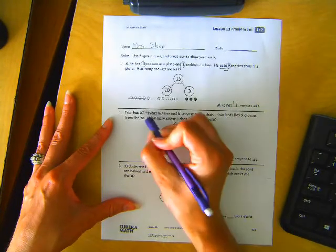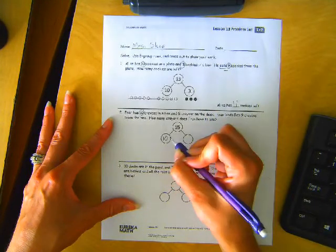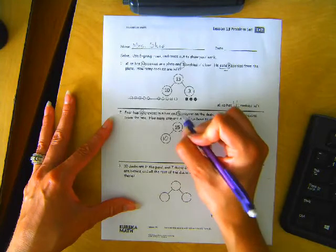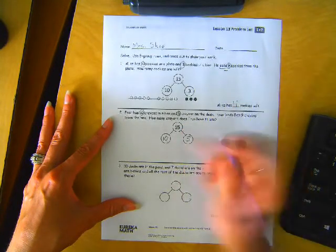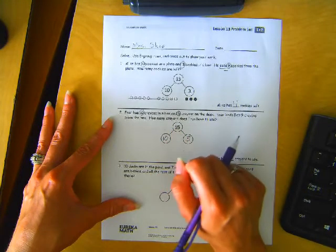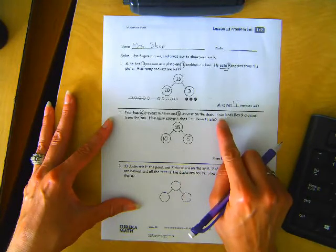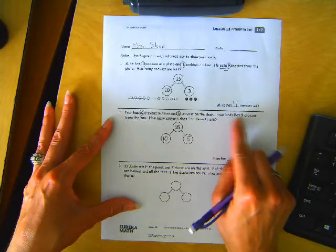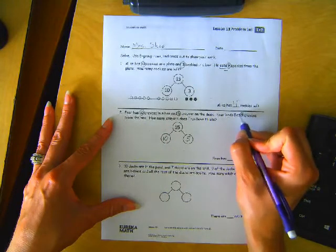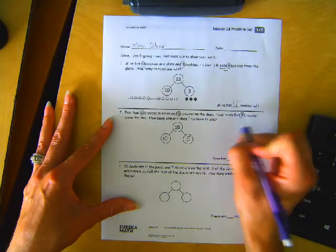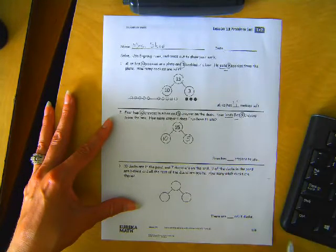So there's ten crayons in a box. We'll put the ten here. There's five crayons on the desk. We'll put that here. Ten and five make fifteen, so that makes sense. Fran lends Bob nine crayons from the box. So if she's lending some crayons to someone else, that means she's giving them away. That means we're taking away that subtraction.